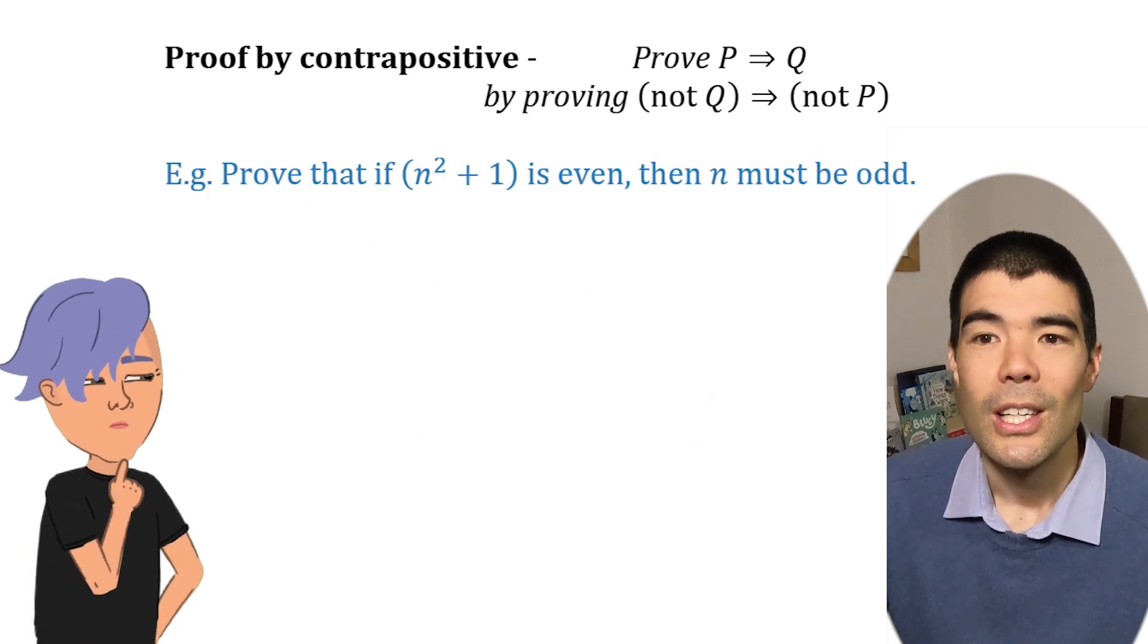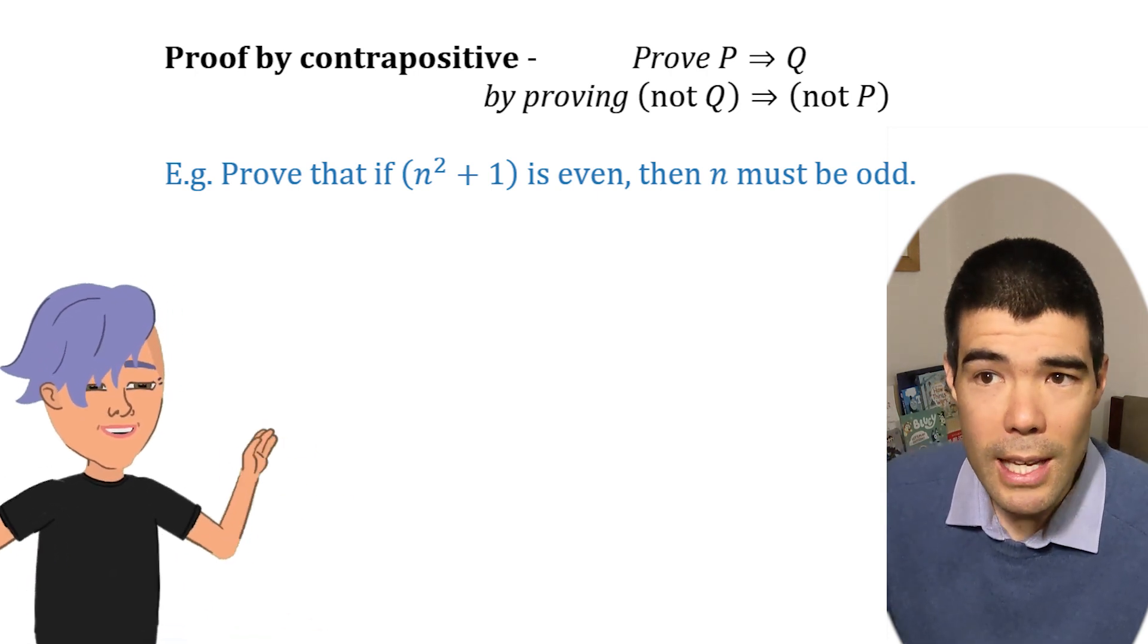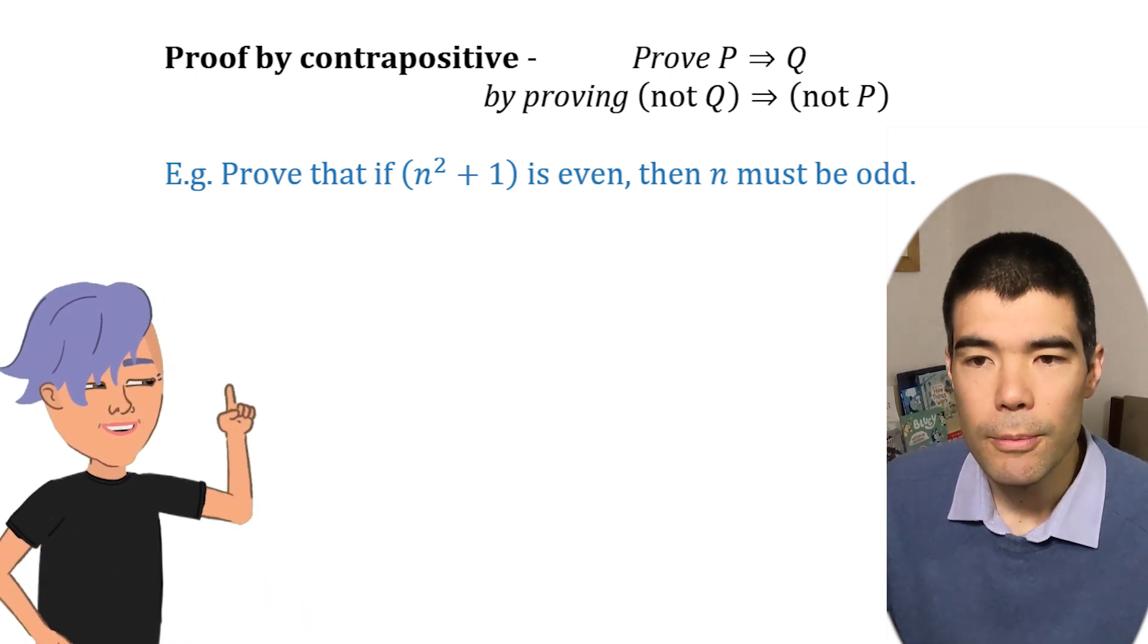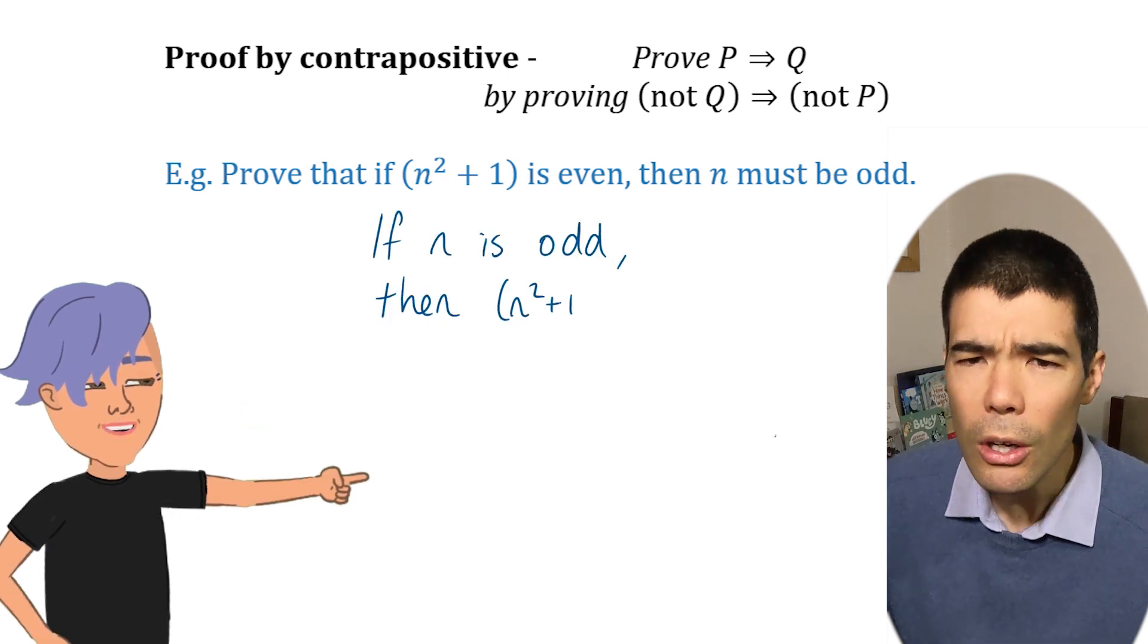Okay, can we do an example? Sure. Let's use the contrapositive to prove that if n squared plus one is even, then n must be odd. Okay, so we want to flip it and prove that if n is odd, then n squared plus one is even. Ah, not quite. That's called the converse. But it's not logically equivalent.